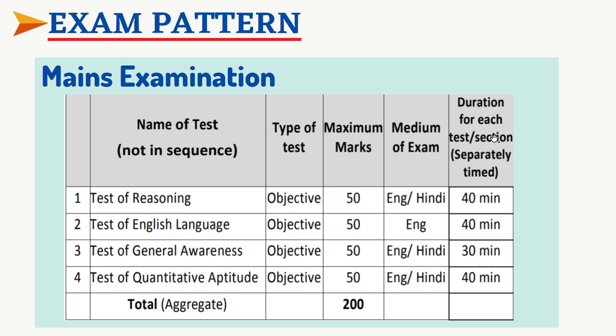For Mains, there will be 4 topics: Reasoning, English, General Awareness, and Quantitative Aptitude, with a total of 200 marks. There is sectional timing — 40 minutes for Reasoning, 40 minutes for English, 30 minutes for General Knowledge, and 40 minutes for Maths.